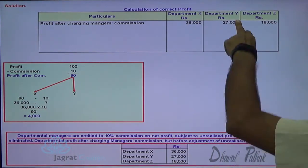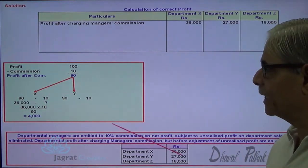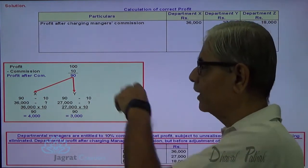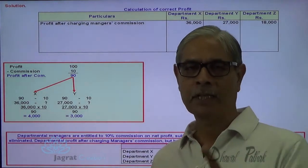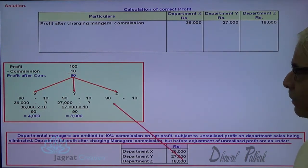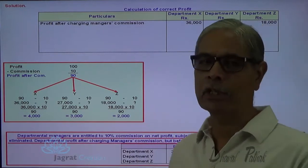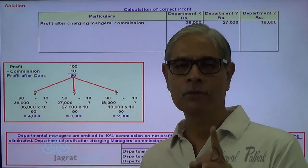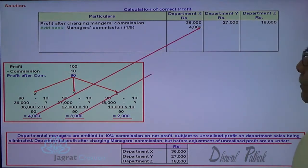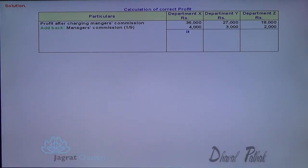Same way, let us work out for 27,000 (department Y): if 90 is the profit after commission, then 10 is the commission — so 3,000 is the commission for 27,000. For Z, 90 against 10 commission — how much for 1,800? So 2,000. This commission was already given and was incorrect, so we add it back: 4,000 for X, 3,000 for Y, and 2,000 for Z. Now we get the profit before commission.